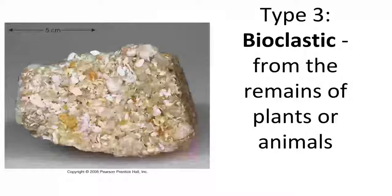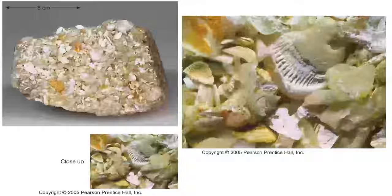The last type of sediment in sedimentary rock is bioclastic. 'Bio' refers to things that are living, so bioclastic sediments come from something that was once living — whether a plant or animal. In the close-up picture, the remains shown are shell pieces. When shell pieces are stuck together, you form a bioclastic sedimentary rock, such as limestone.